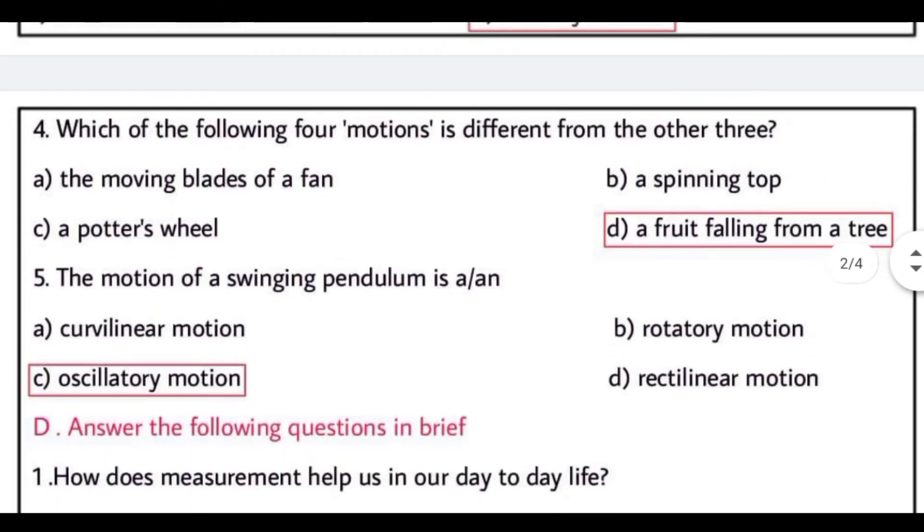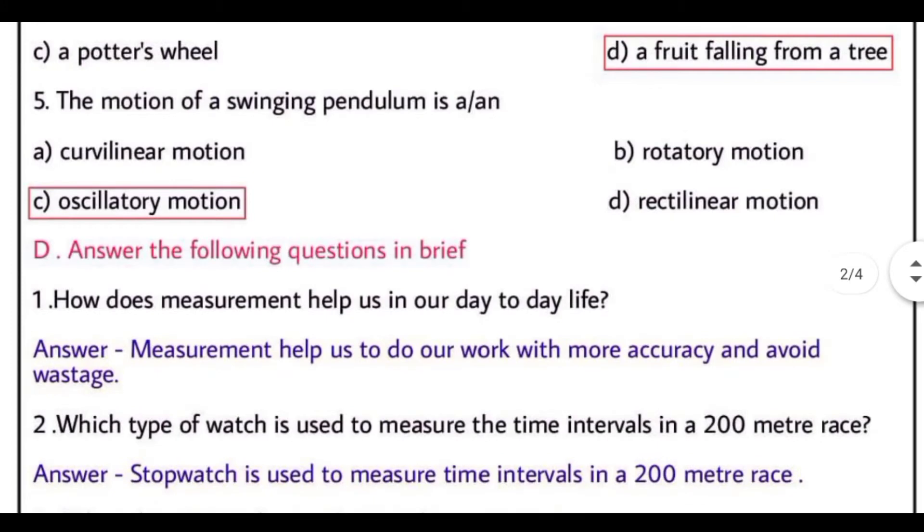Which of the following four motions is different from other three? The motions are: the moving blades of a fan, a spinning top, a potter's wheel, and a fruit falling from a tree. In charo motion mein, a fruit falling from a tree is different from other three. Number five is, the motion of a swinging pendulum is an example of oscillatory motion.